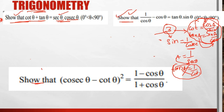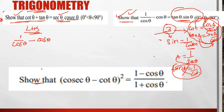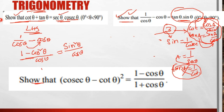Next, I will show that 1/cos θ − cos θ = tan θ · sin θ. LHS is 1/cos θ − cos θ. We write this as (1 − cos²θ)/cos θ. Based on identity 1, sin²θ + cos²θ = 1, so 1 − cos²θ = sin²θ.